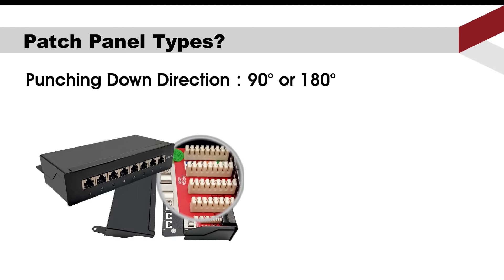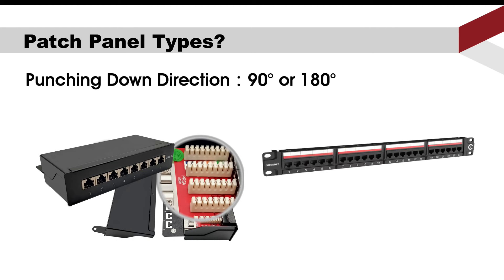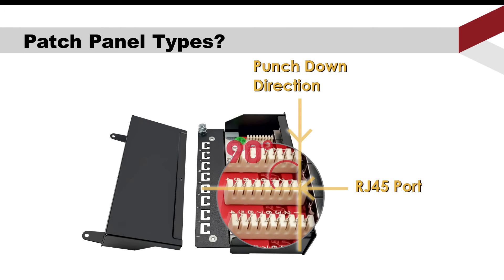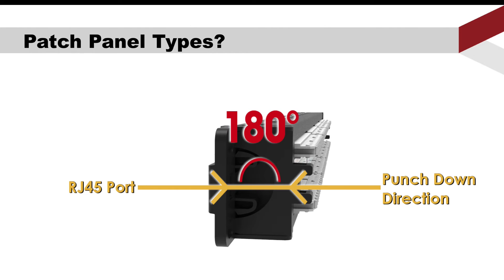Third, by punching direction: 90 degrees or 180 degrees. You can tell by the angle between the direction in which the cable is punched down into the panel and the RJ45 port. At 90 degrees, the RJ45 port and punched-down direction meet vertically; at 180 degrees, the RJ45 port and punched-down direction are horizontal.